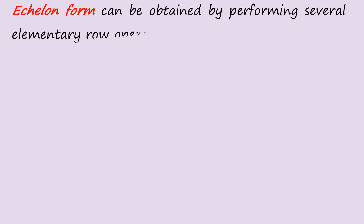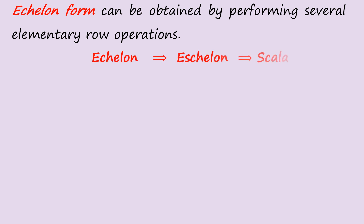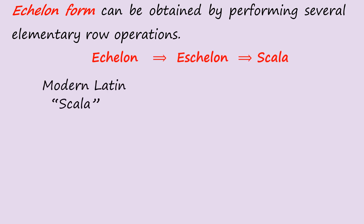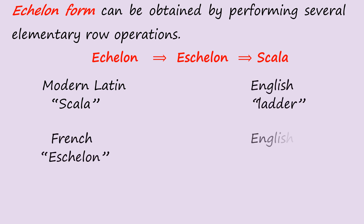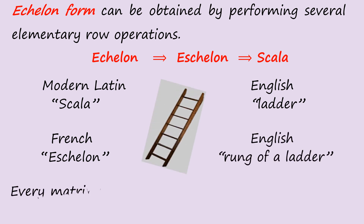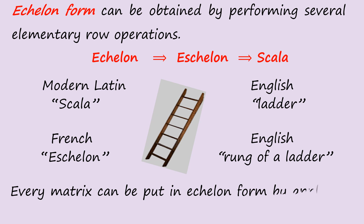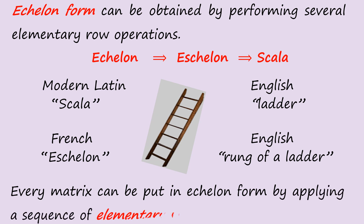The echelon form can be obtained by performing several elementary row operations. The modern Latin for the word is 'scalar' and the English version is 'ladder.' The French is 'échelon' and the English is 'the rung of a ladder.' Every matrix can be put in echelon form by applying a sequence of elementary row operations called E-row.